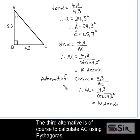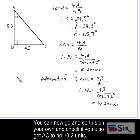There is, of course, a third alternative, which is to use Pythagoras to calculate AC. You can now go and do this on your own and check if you also get AC to be 10.2 units.